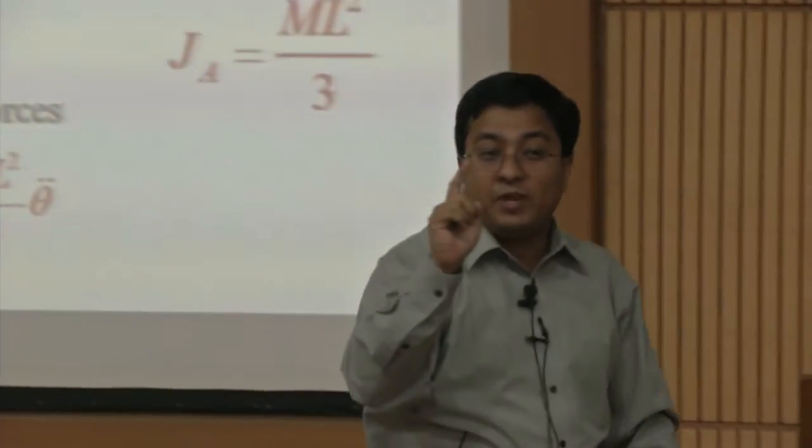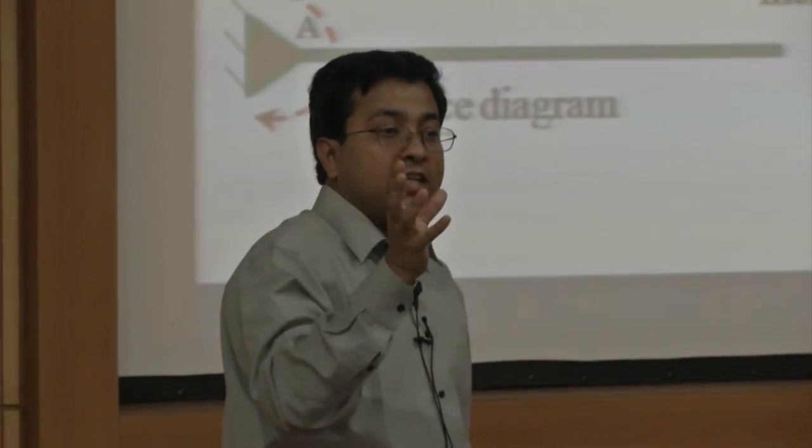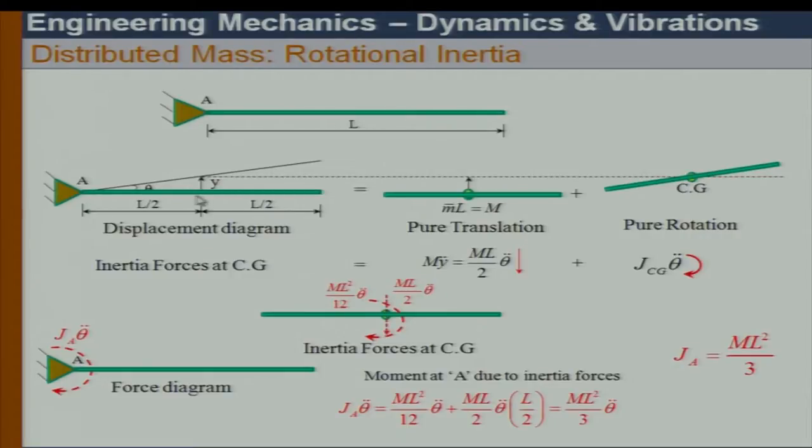When showing the rigid body rotating about point A using D'Alembert, we replace the body with a lumped mass at its CG. The motion is decomposed into pure translation and rotation about its own CG. So there are two inertia forces: one from the translation and one from rotation about the mass center.